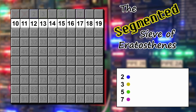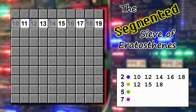The crucial addition in the segmented sieve is that for each relevant prime we record the last number we crossed out, and when we move to the next segment we continue where we left off. First we look at multiples of 2 and cross out 10, 12, 14, 16, 18. Then multiples of 3: 12, 15, 18 — but only 15 is a new cross-out. Multiples of 5 are 10 and 15, already crossed out. Multiples of 7: 14, already crossed out. With that stage complete, everything remaining in the segment is prime, and we move on to the next segment.